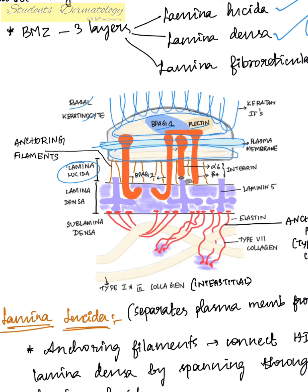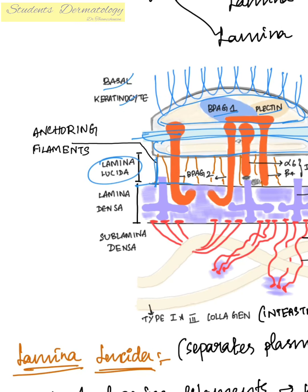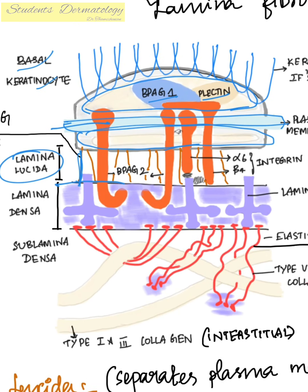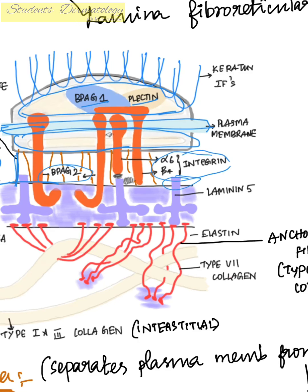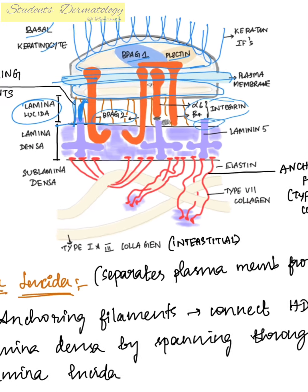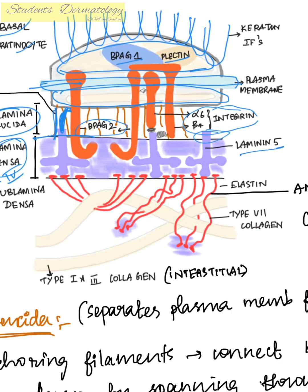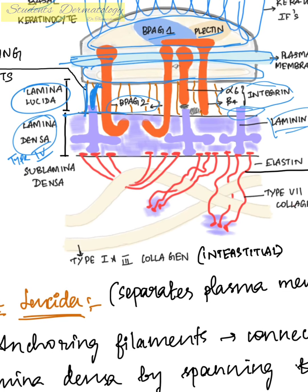The lamina lucida separates the plasma membrane from the lamina densa. Anchoring filaments run through the lamina lucida from the plasma membrane to the lamina densa. The proteins present in the lamina lucida are bullous pemphigoid antigen 2, alpha-6 beta-4 integrin, a part of laminin 5, and uncein — mutation of uncein leads to junctional epidermolysis bullosa. The major collagen in the lamina densa is type 4 collagen, and it also contains laminin 5.